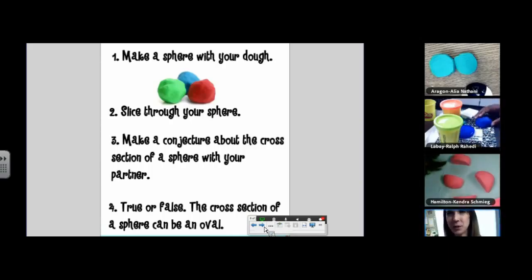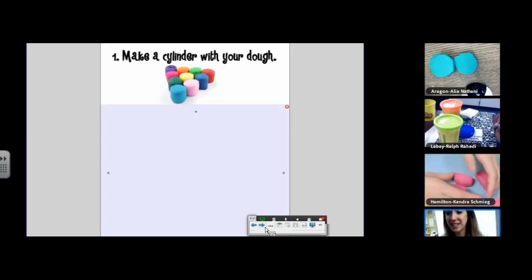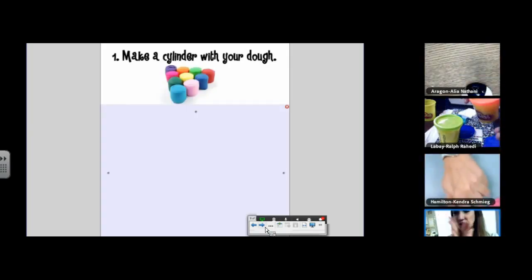So you cannot get an oval out of a cross-section for a sphere. Now, please, to the best of your ability, make a cylinder with your dough.